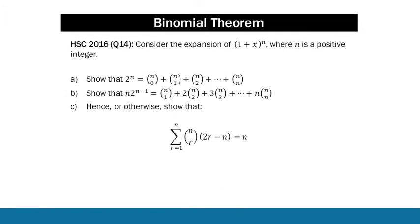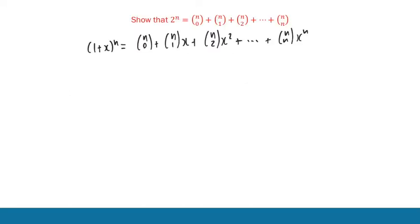We'll start with this question from last year's HSC. It came up in the last question of the exam. So we're asked to consider the expansion of (1 + x) to the N. We're asked to first show that 2 to the N is equal to that set of binomial coefficients, then a slight variation of it, and then bring that all together at the end. This is a 4 mark question, probably around the mid-range of how many you'd be expecting. But let's get straight into it. For the first part, you'll just want to write out the expansion of (1 + x) to the N. This is something you should be able to do instinctually, almost from memory.